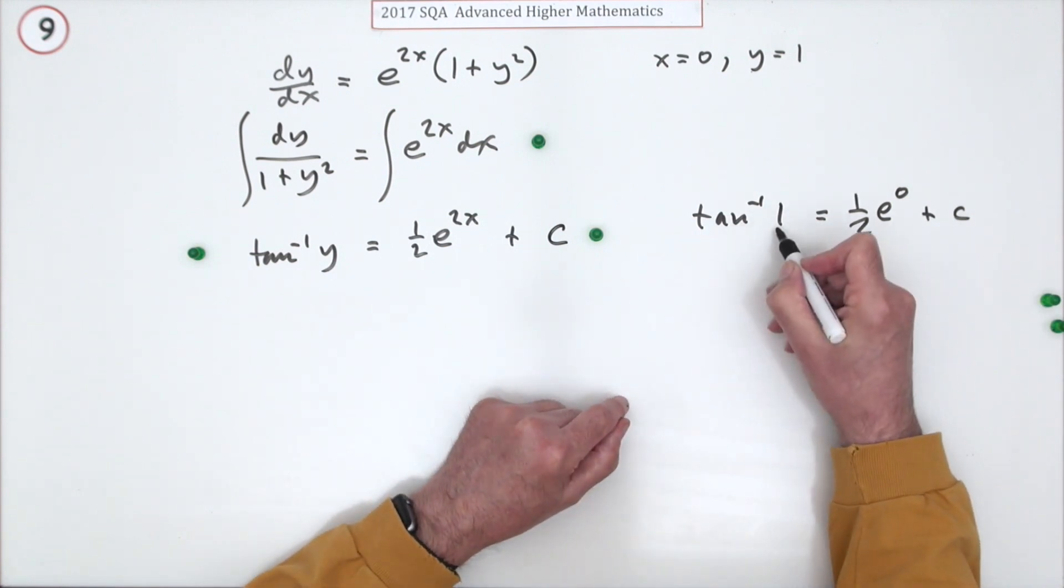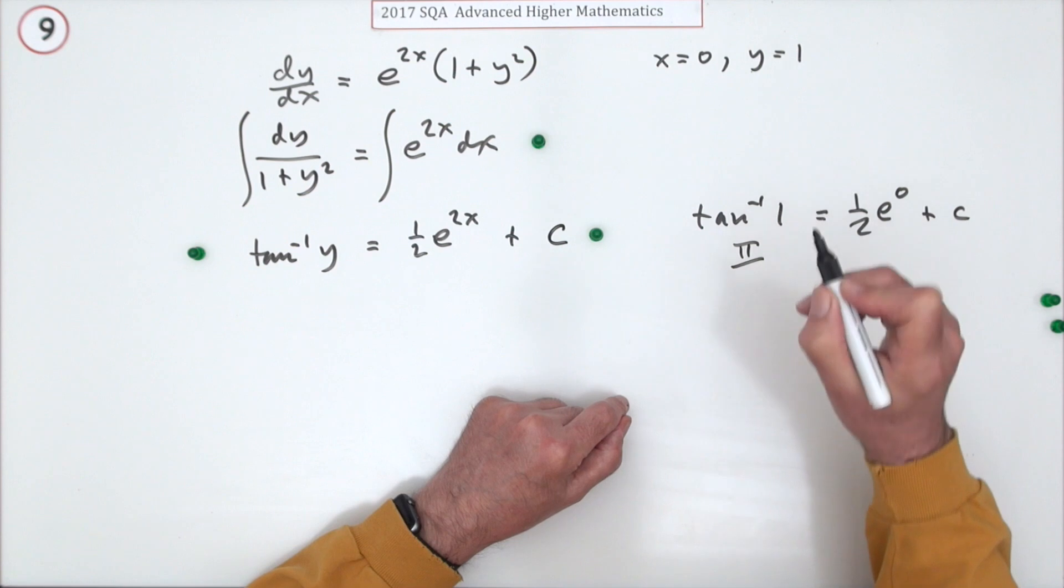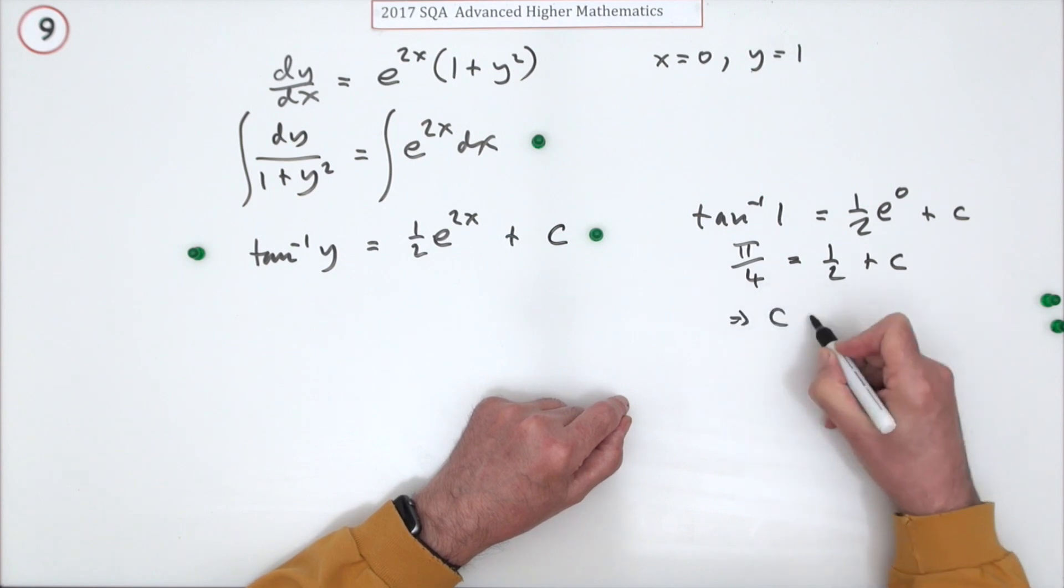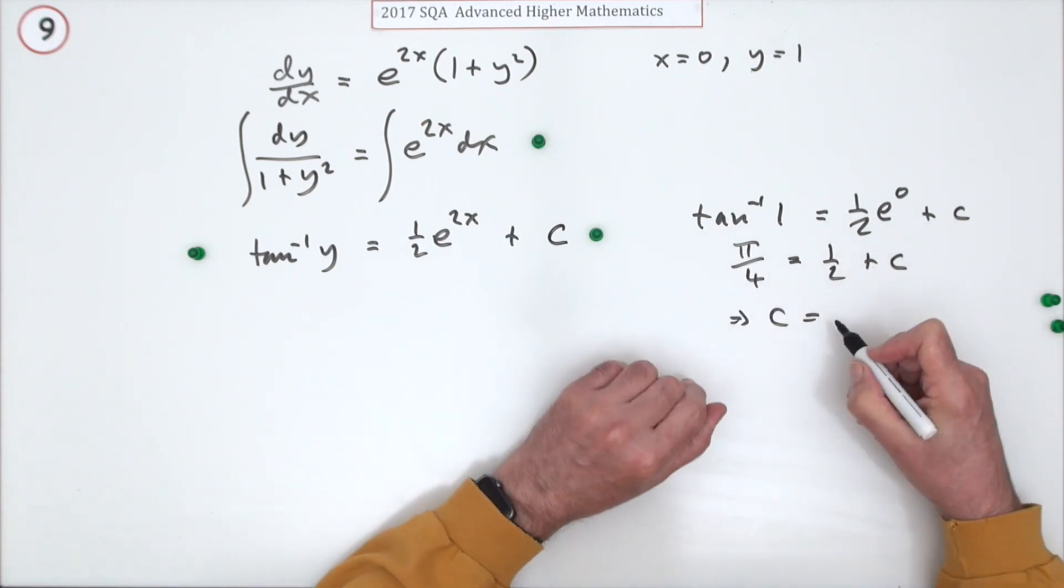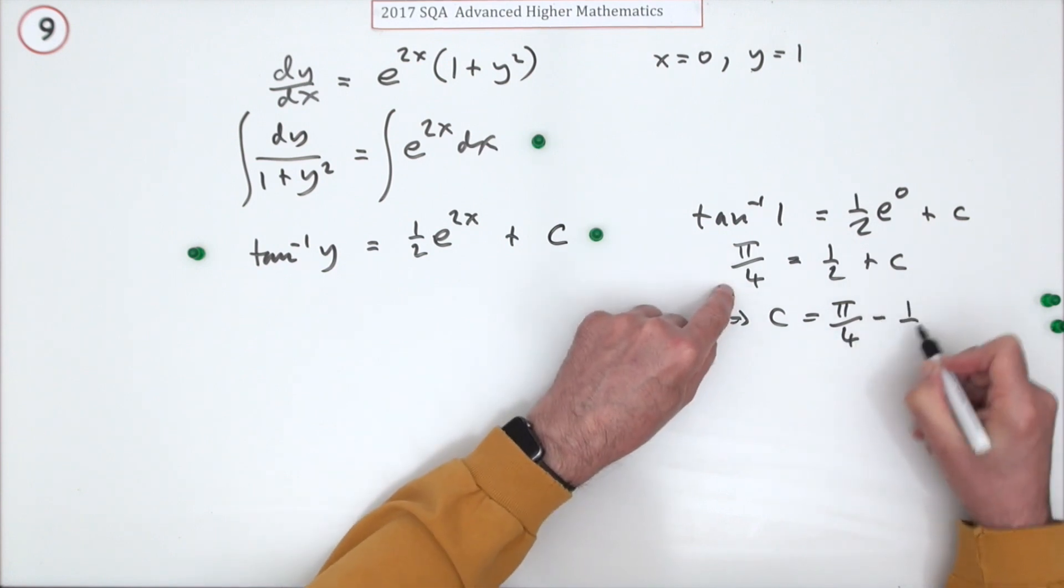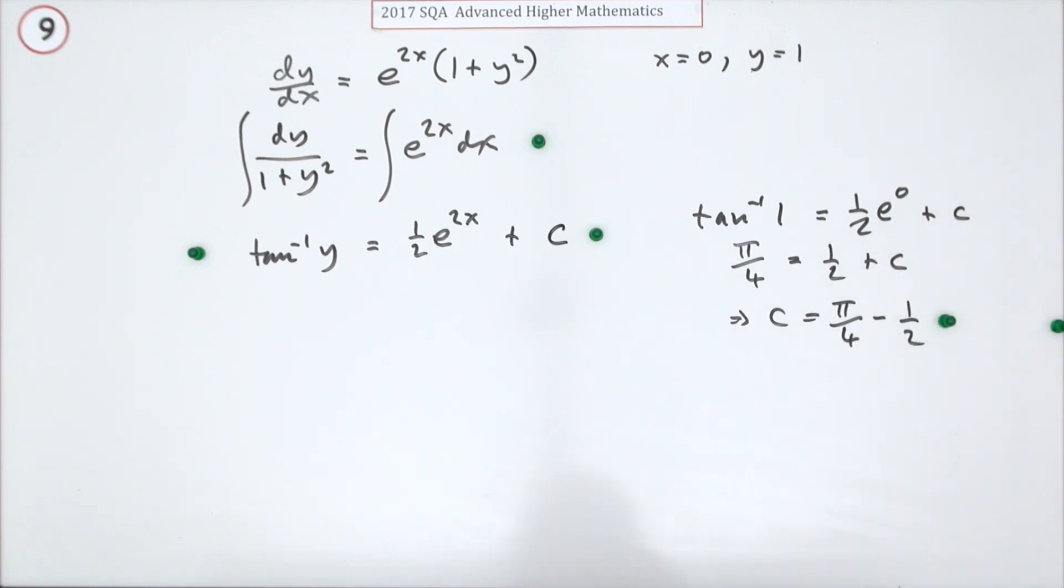Well, 1 came from 45 degrees. But it has to be in radians of course. So pi upon 4. E to the 0 is just 1. So that's a half. Which means unfortunately c is made up of two bits that don't readily join together. C is going to be pi upon 4 minus a half. That's a mark.